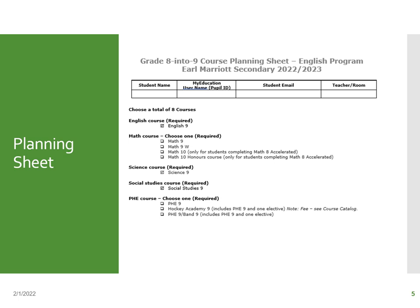Moving into math — for English students, you can take regular math, or you might have been recommended for 9W. If you were in the accelerated class this year, you can choose Math 10, and for those who want a challenge, there's also Math 10 Honors. Science 9 and Social Studies 9 are already checked off — everybody has to take those. For PE, you can take regular PHE 9. If you're thinking of doing the Hockey Academy, note that it takes up two spots — your PE 9 plus one elective — because it's two blocks.